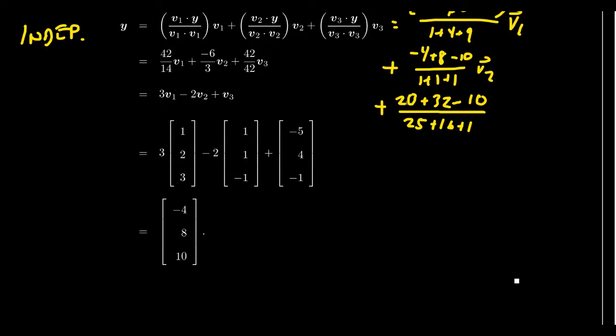So, we're going to take 3 times V1 times negative 2 times V2 plus 1 times V3. So, looking there, you're going to get 3 minus 2 minus 5. That's a negative 4.